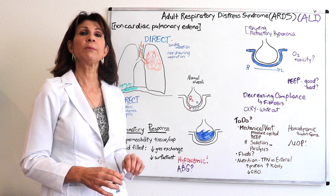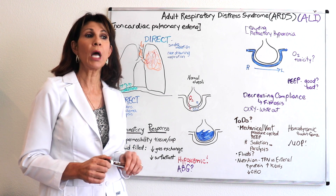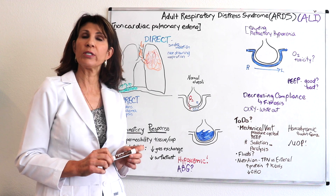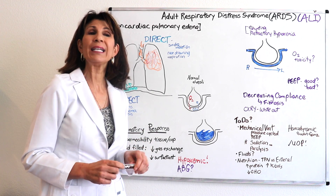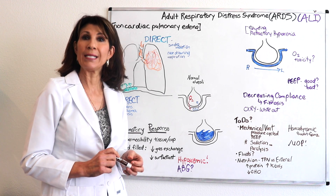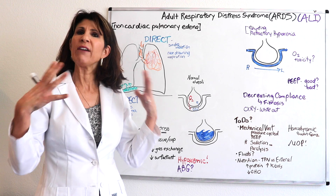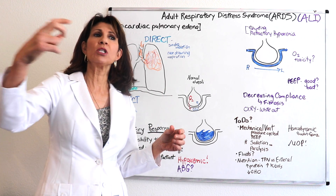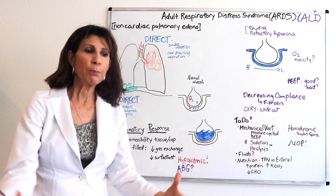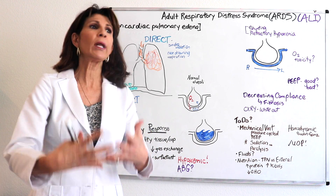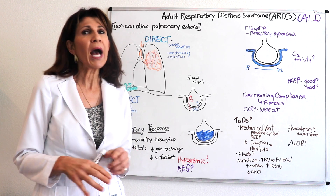Let's do adult respiratory distress syndrome, also called acute lung injury or ARDS. Really, it's a form of pulmonary edema. Normally we think of pulmonary edema as caused by left heart failure, where blood going to the left heart meets resistance and hydrostatic pressure pushes fluid back into the alveoli, impairing gas exchange.